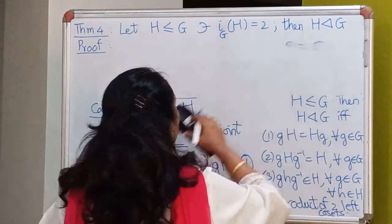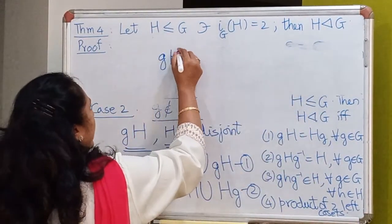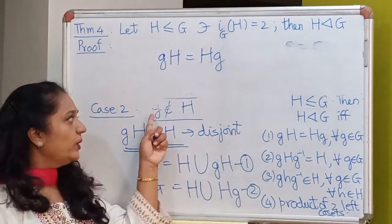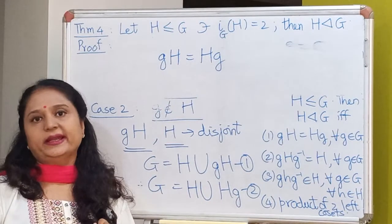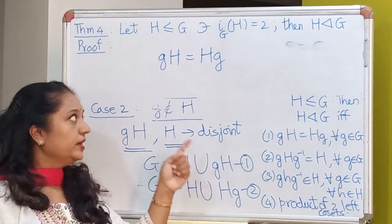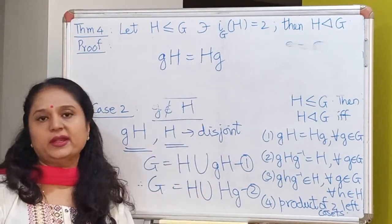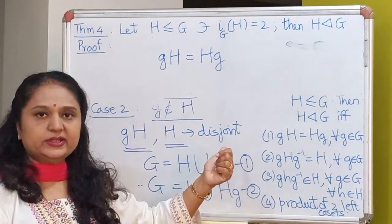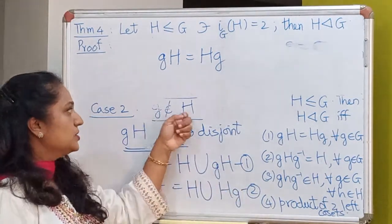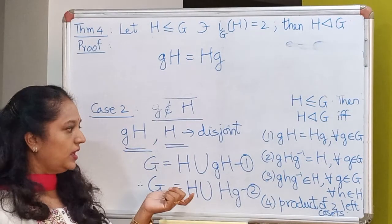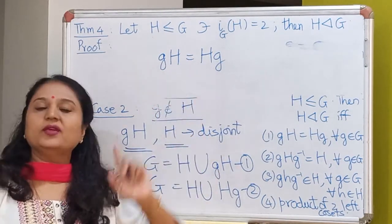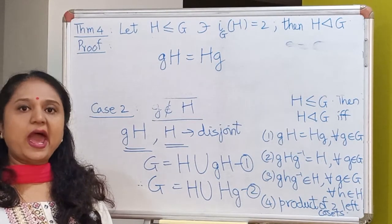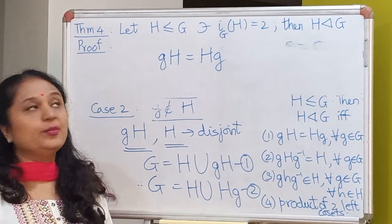So gH equals Hg. Even when g is not inside H, the left coset equals the right coset. So irrespective of whether g lies inside H (Case 1) or g is not inside H (Case 2), the left coset equals the corresponding right coset. Therefore H has to be a normal subgroup of G.